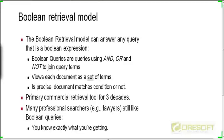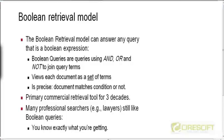Last time and in the first lecture, we saw that when constructing the term-document incidence matrix, we were ignoring the positions of words in documents and also ignoring the counts of terms. We were ignoring how many times each term occurs in a document — just recording the presence or absence of a term.